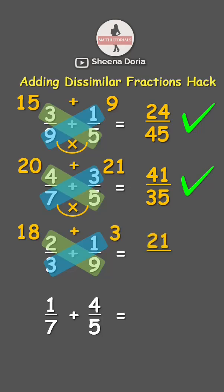Multiply the denominators: three times nine is twenty-seven. The answer is twenty-one over twenty-seven. Now, if you need to simplify your answers, check out our previous video on how to simplify fractions. But for now, try solving the last one and comment your answer below.